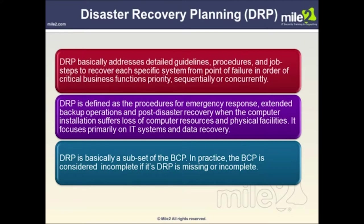Disaster recovery is a subset of business continuity. Business continuity involves planning for the continuation of critical aspects of business processes in the midst of disruptive events, while disaster recovery focuses on the IT capabilities and technology systems that support business functions. Disaster recovery planning, or DRP, addresses detailed guidelines, procedures, and job steps to recover each specific system from a point of failure in order of critical business functions priority, sequentially or concurrently. DRP is defined as the procedures for emergency response, extended backup operations, and post-disaster recovery when the computer installation suffers loss of computer resources and physical facilities. Business continuity plans are considered deficient if disaster recovery plans are missing or incomplete.